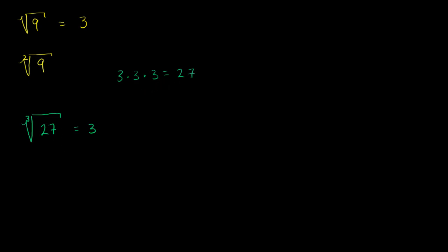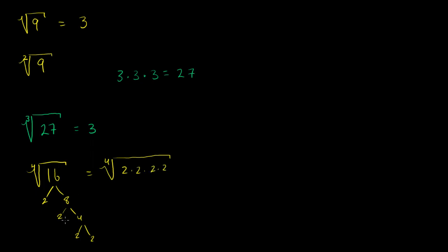Let me just do one more. If I have 16 and I want to take the fourth root of 16, what number times itself 4 times is equal to 16? If it doesn't pop out at you immediately, you can do a prime factorization of 16. 16 is 2 times 8, 8 is 2 times 4, 4 is 2 times 2. So this is equal to the fourth root of 2 times 2 times 2 times 2 — you have four 2's. The fourth root of this must be equal to 2, which is the principal fourth root. Just like you have multiple square roots, you have multiple fourth roots, but the radical sign implies the principal root.